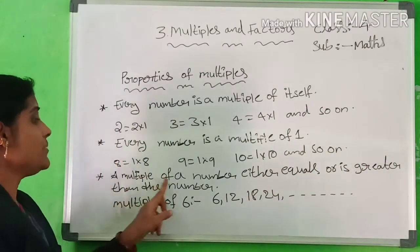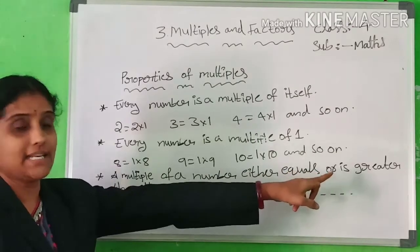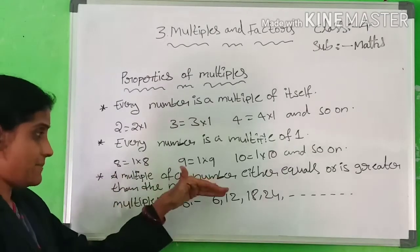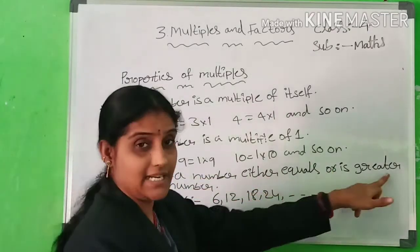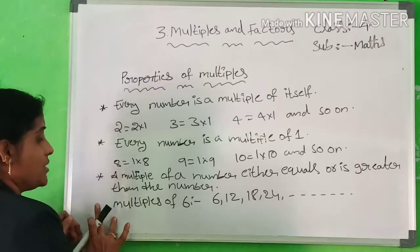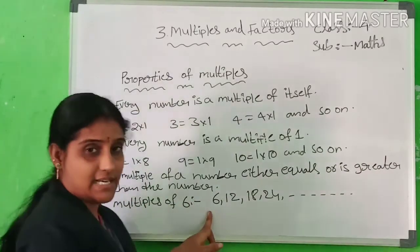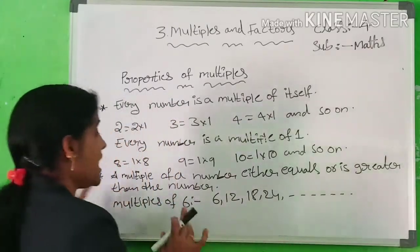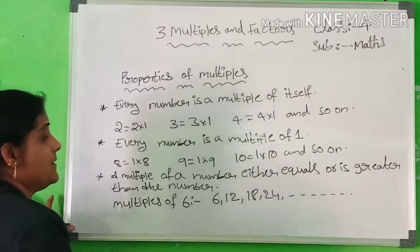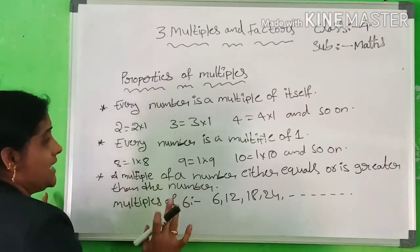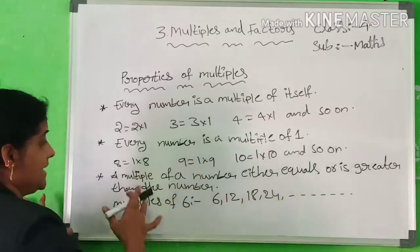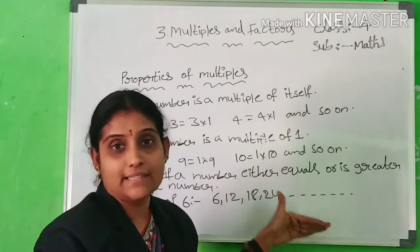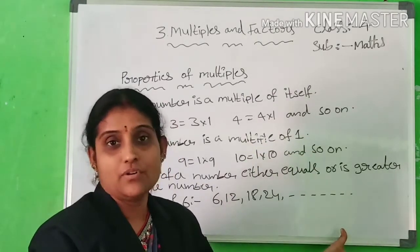Third property: a multiple of a number either equals or is greater than the number. For example, multiples of 6 are: 6×1=6, 6×2=12, 6×3=18, 6×4=24. What do you observe? The multiples are either equal to or greater than 6.